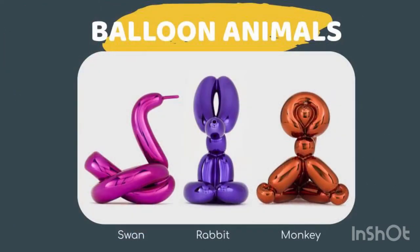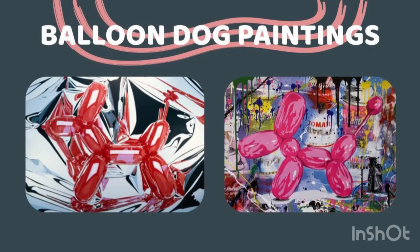Here are some of his other balloon animals: a swan, rabbit, and a monkey. He also makes balloon dog paintings. You can see he makes it look 3D by adding highlights and shadows. So we are going to make our own balloon dog today.